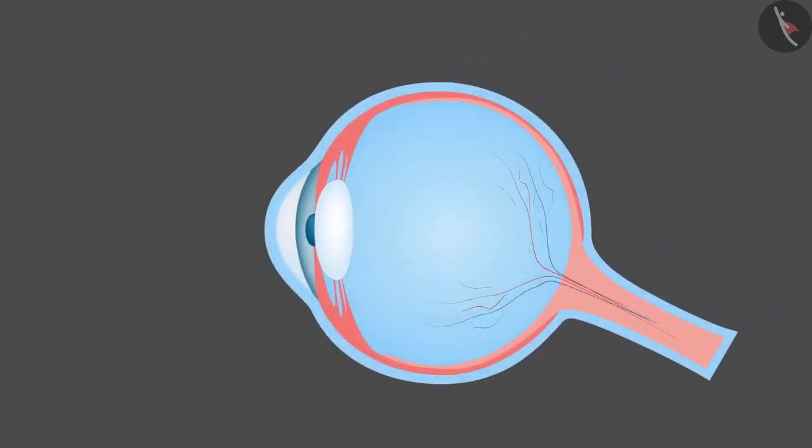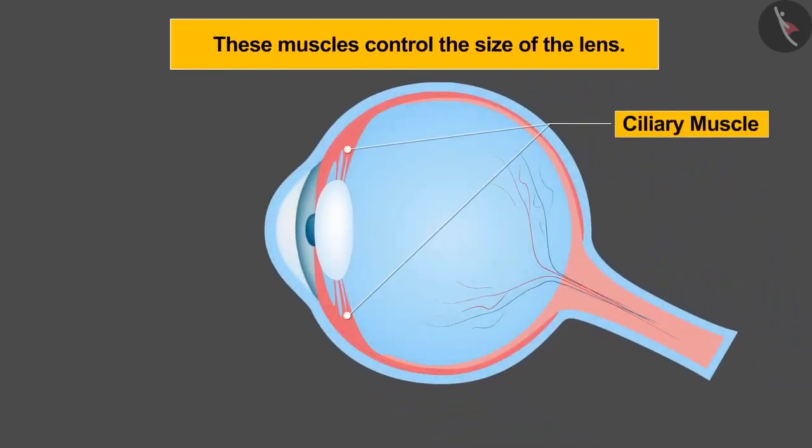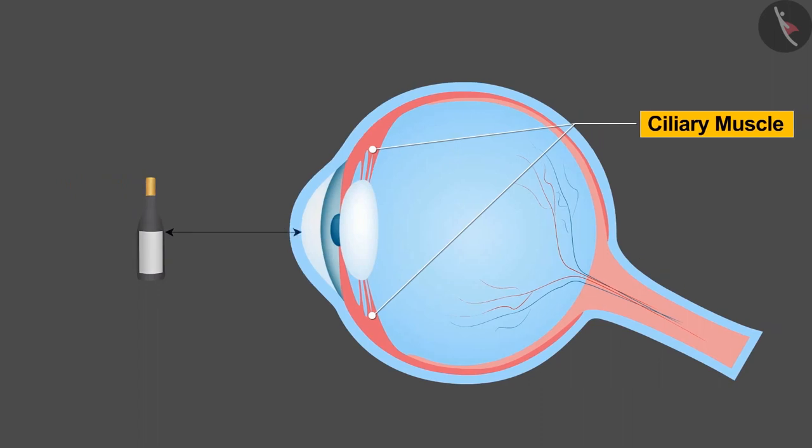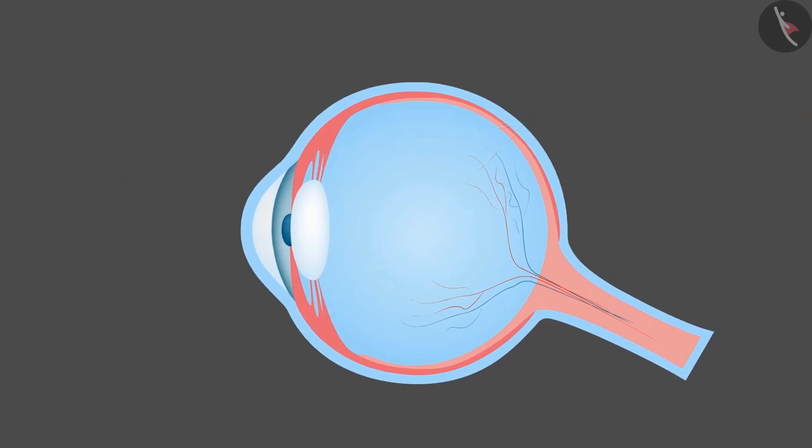These lens are attached to the eyes by the ciliary muscles. These muscles control the size of the lens, due to which we are able to see distant and nearby objects clearly.